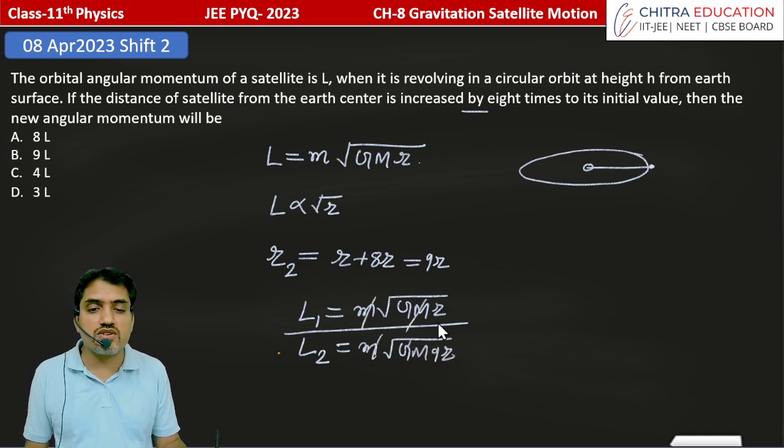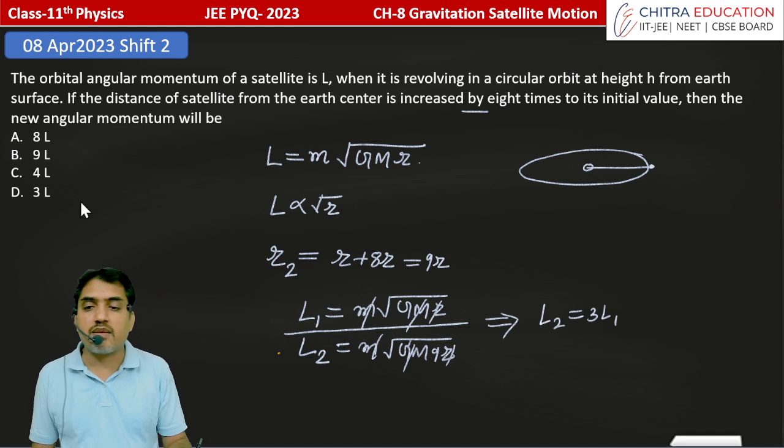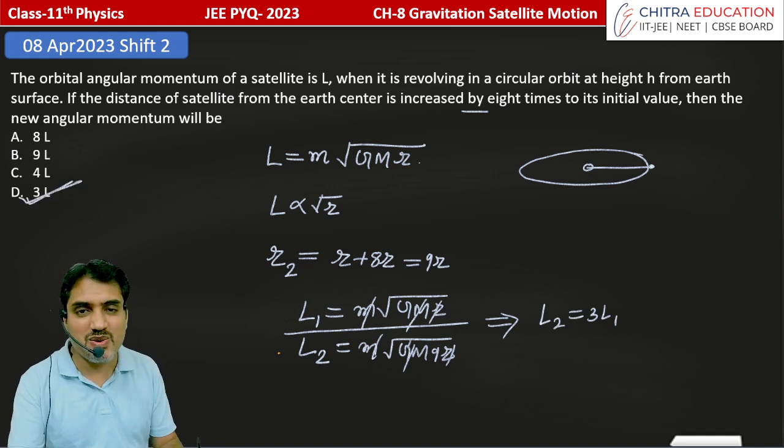So here M, M, G, G will cancel, R will also cancel here, and we will get L2 equal to 3L1, meaning 3L. D here will be our correct answer.